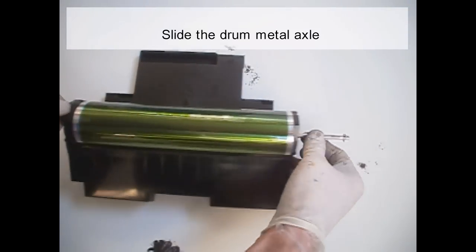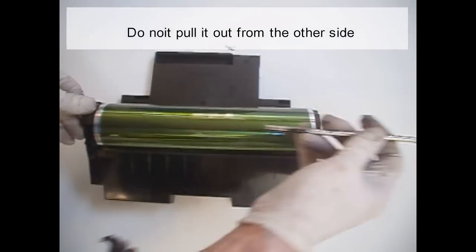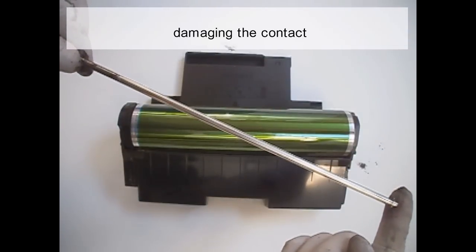Slide the metal drum axle. Do not pull it out from the other side, the metal shaft will jam up on the drum ground contact, damaging the contact.